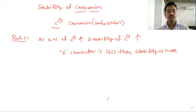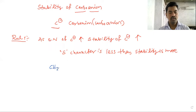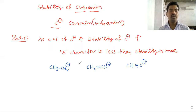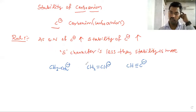For example, consider these three hybridization cases: CH3CH2 minus, then CH2=CH minus, then CH≡C minus. So here we have three examples, and in these three carboanions, carboanion 3 — the alkynyl carboanion — is the most stable.